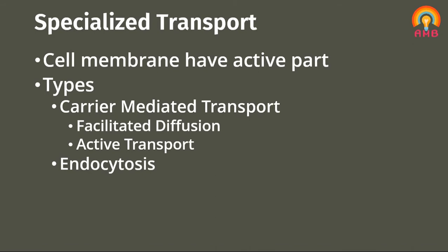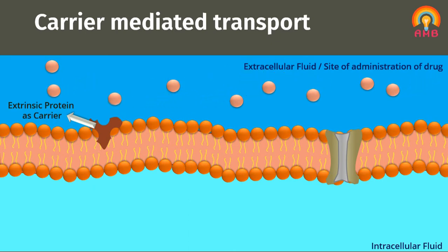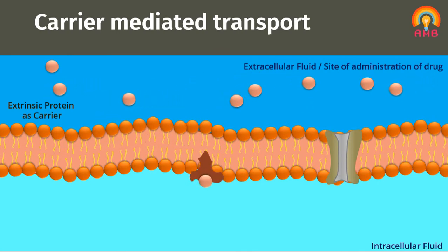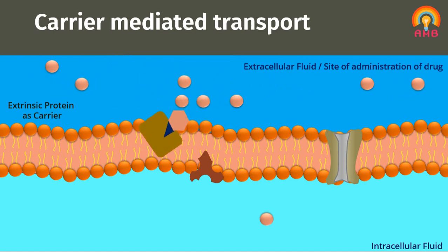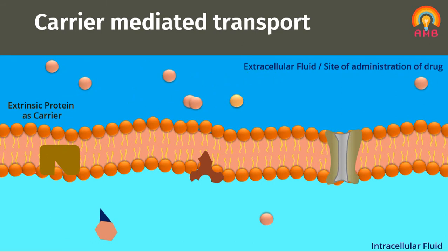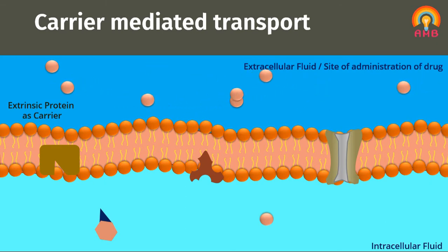Now we will discuss about carrier-mediated transport. In this process, the drug combines with a carrier present in the membrane, and the formed complex moves from one phase of the membrane to the other. The carriers for polar molecules form a hydrophobic coating over hydrophilic groups, facilitating transport through the membrane. Carriers responsible for transportation of ions across the membrane are called ionophores. Carrier-mediated transport is specific, saturable, and competitively inhibited by substances which utilize the same carrier.